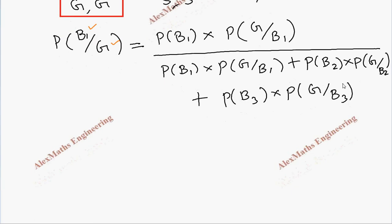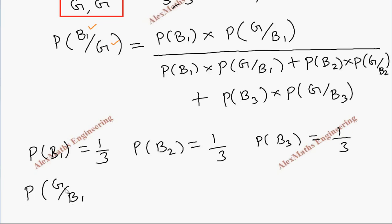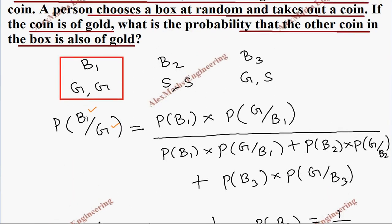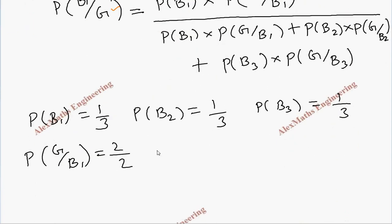Now, let's write the probability P of B1 value. There are three boxes. So, the probability of getting each box is 1 by 3. And coming to the other value. That is, P of from B1 getting gold. There are two gold and total number of coins is also 2. So, 2 by 2 which is 1. Let's keep 2 by 2 itself.